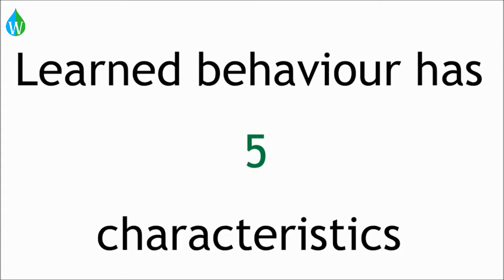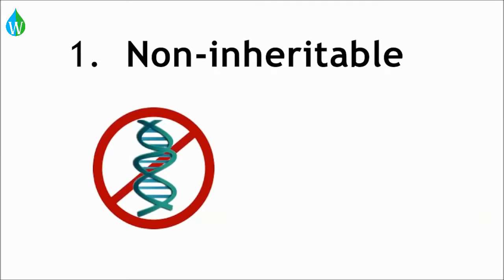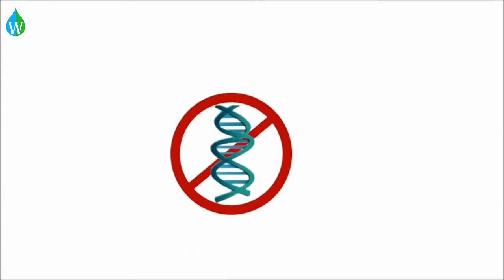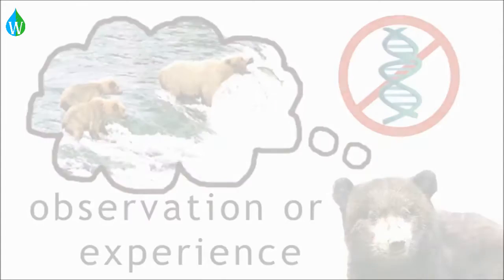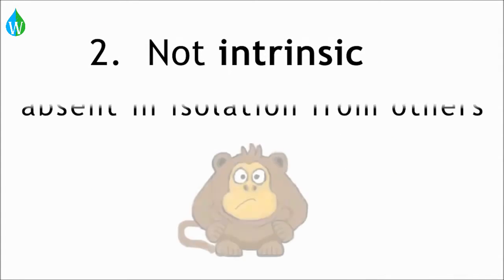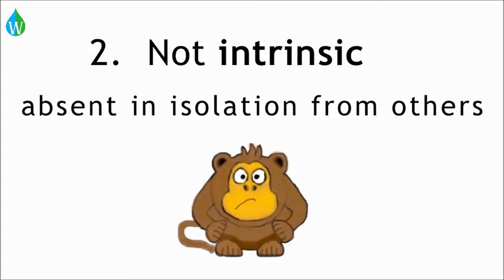Learned behavior has five characteristics. It is non-inheritable, so it isn't passed on from previous generations. It is only acquired through observation or experience. It is not intrinsic, so absent in animals raised in isolation from others.